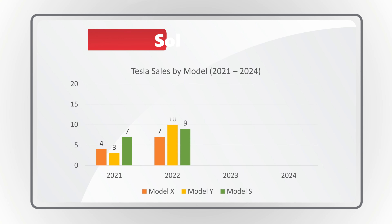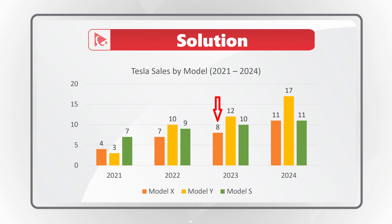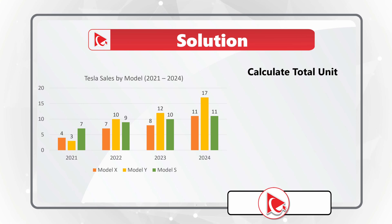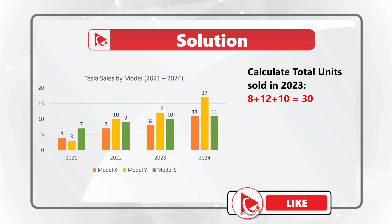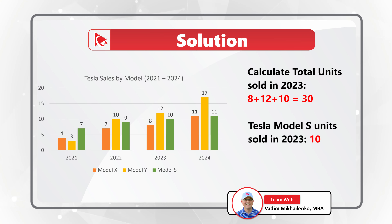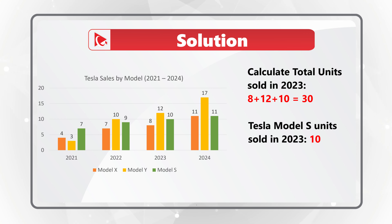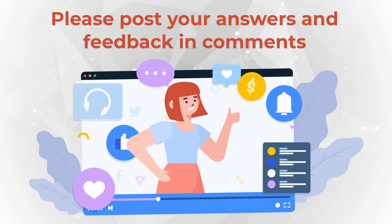Let's take a close look at 2023 sales. We sold 8 units of Model X, 12 units of Model Y, and 10 units of Model S. Total units sold in 2023 would be 8 + 12 + 10 = 30. We sold 10 units of Model S, which is one-third of 30 total units, so the percentage is approximately 33%. The correct choice is C.